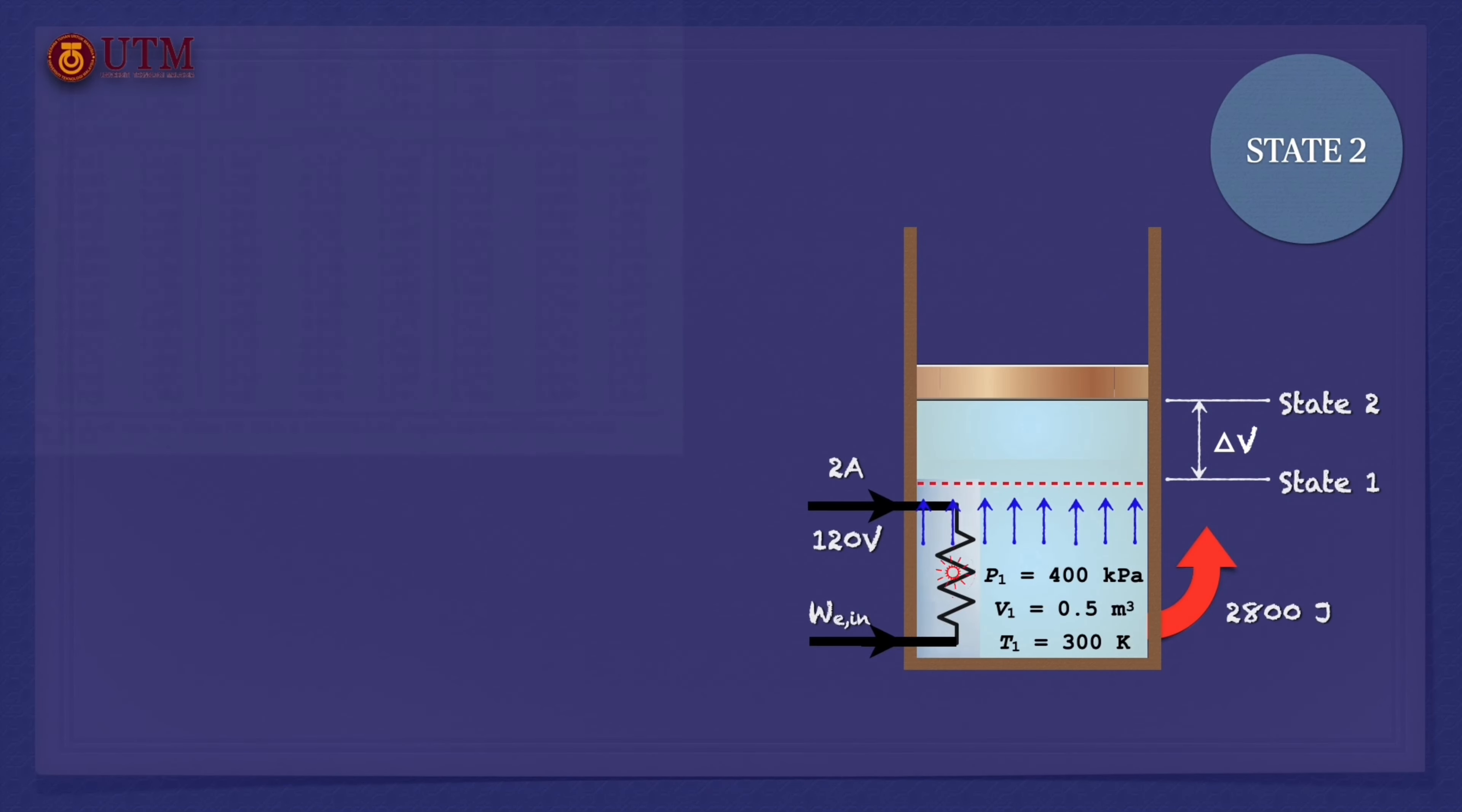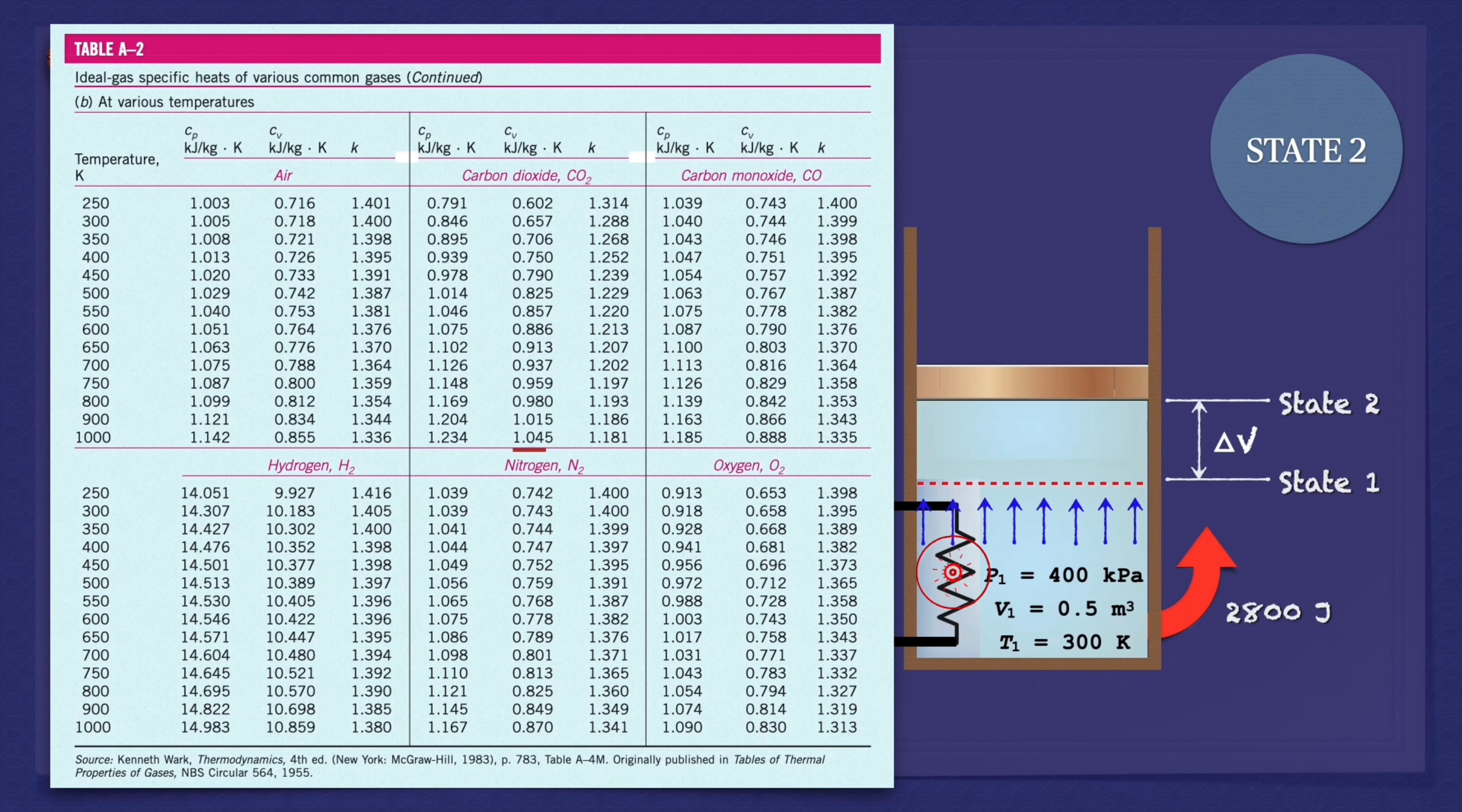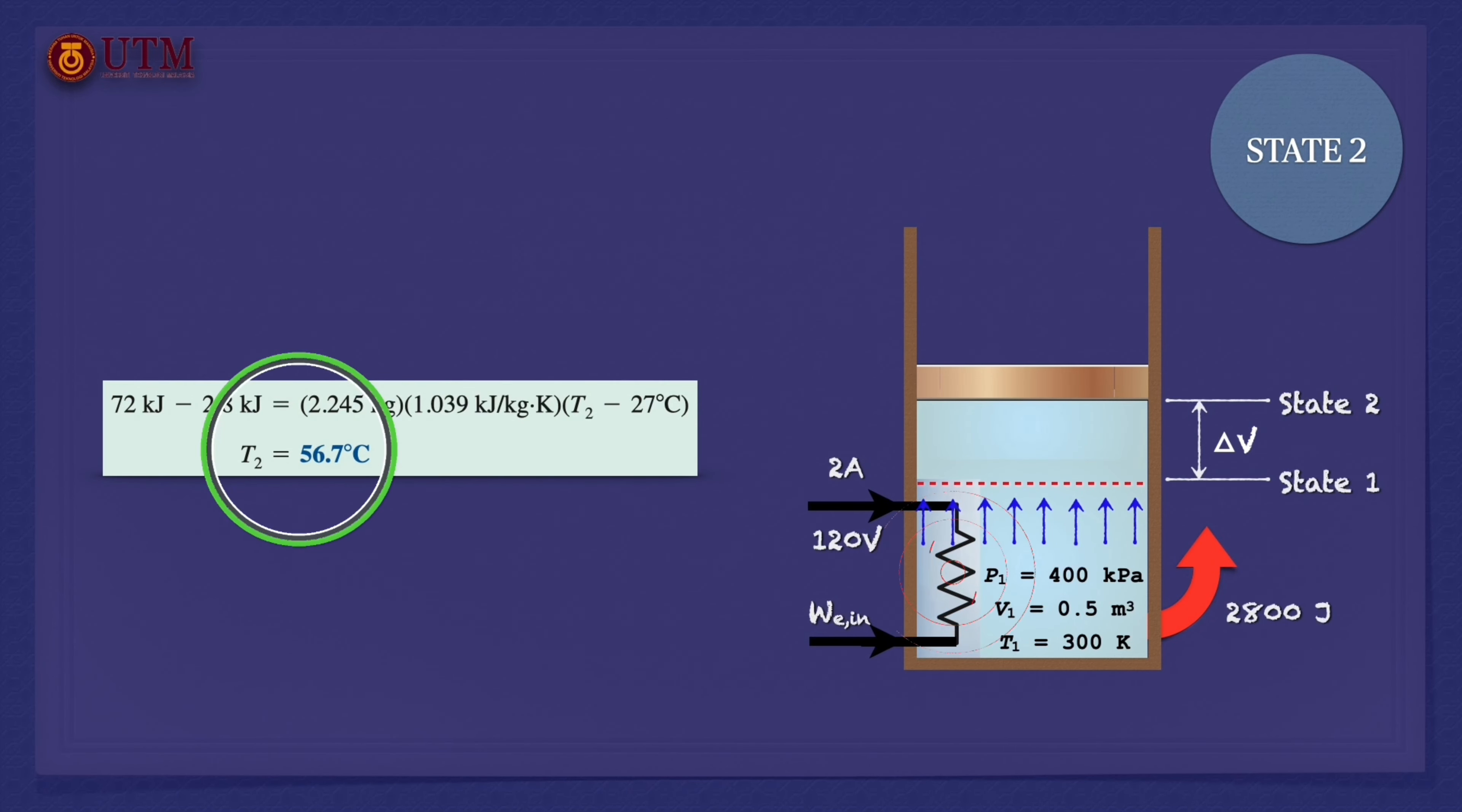From table A-2B, Cp equals 1.039 kJ per kilogram Kelvin for nitrogen at room temperature. The only unknown quantity in the previous equation is the final temperature, and it is found to be 56.7 degrees Celsius.